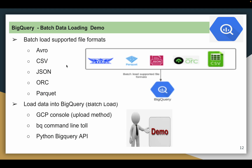What are the different file formats BigQuery supports? It supports different file formats — the important ones widely used across the industry are CSV, JSON, ORC, and Parquet. As part of this demo I am using a CSV file. I plan to do multiple videos on each of these file formats in detail. For this demo I am using three options to load data: GCP console, BQ command line tool, and Python client libraries.